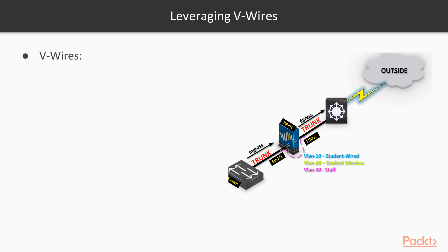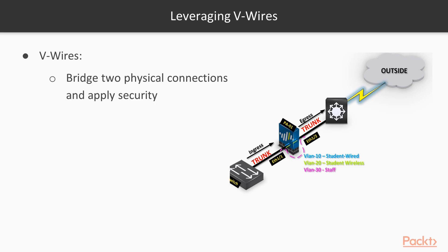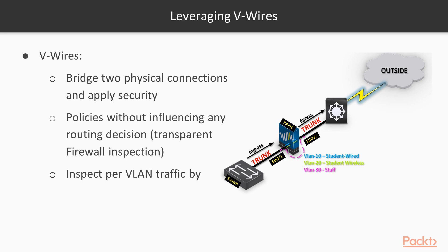In this video, we're going to discuss V-Wires and how to take advantage of them. The reason is that you don't need the Palo Alto to act as a routing hub. You don't need it to route traffic on your network — you just want to apply security policies for inbound and outbound traffic between a VLAN and the outside. We're going to perform some V-Wire configurations.